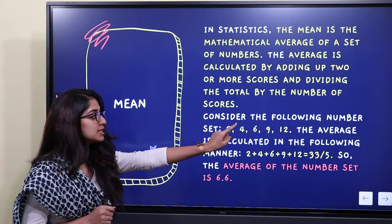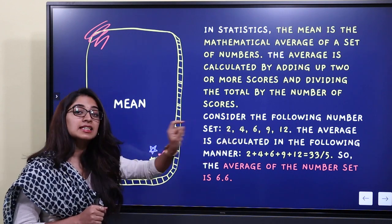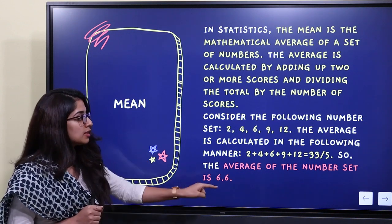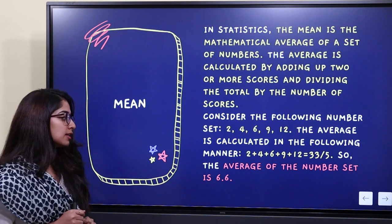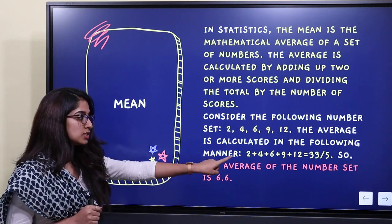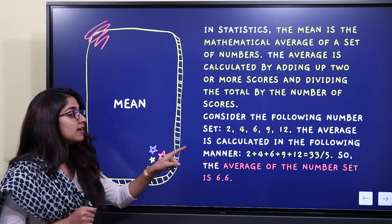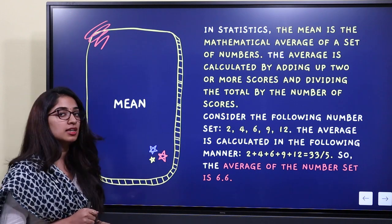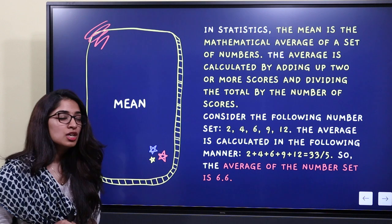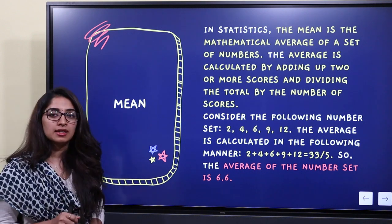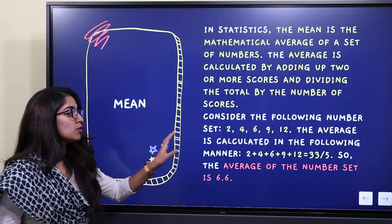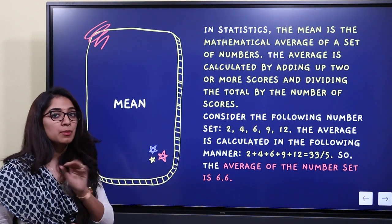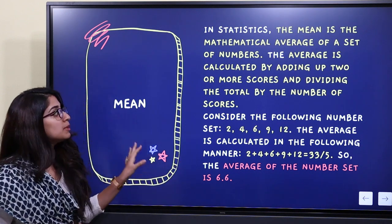So, 2 plus 4 plus 6 plus 9 plus 12, divided by the number of observations, which is 5. That gives us 33 divided by 5. The sum of all observations divided by the number of observations — that is how we find the mean.